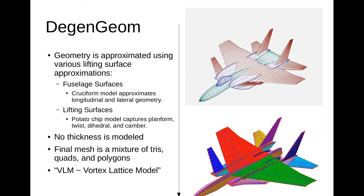The geometry is approximated using various lifting surface approximations. For fuselages, we basically draw the fuselage into what we call a Fuse-a-form model — there's a longitudinal and lateral geometry approximation for fuselages that carries over the planform from both views, as well as camber and twist. For lifting surfaces, we capture planform, twist, dihedral, camber, etc. — I'm borrowing Andy Hahn's potato chip model idea. In both of these, thickness is ignored. The final mesh is a mixture of quads and polygons and tris, and we typically refer to this as a VLM — a vortex lattice model.